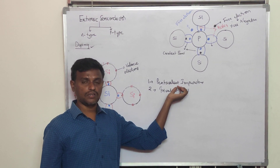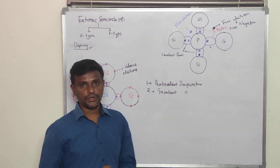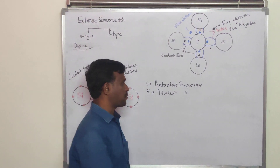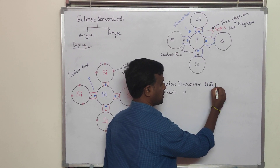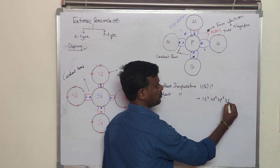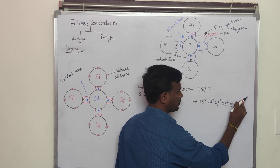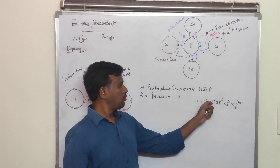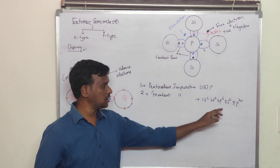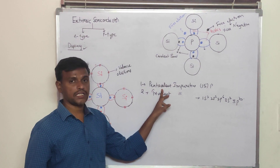Why are these called pentavalent impurities and why are these called trivalent impurities? Because pentavalent impurities consist of five valency electrons. For example, phosphorus has atomic number 15, with configuration 1s2, 2s2, 2p6, 3s2, 3p3. That means in the outermost orbit there are five valency electrons, which is why these are called pentavalent impurities.